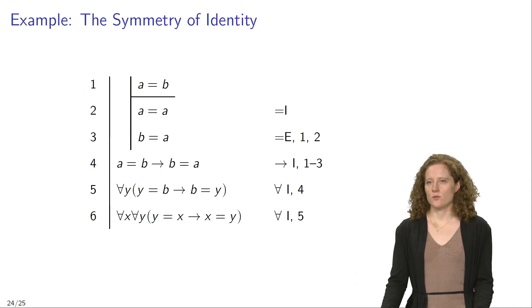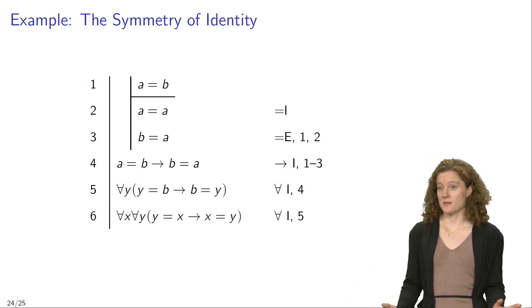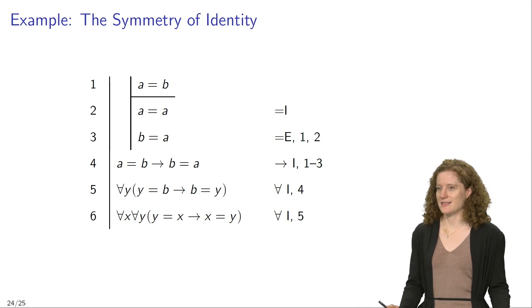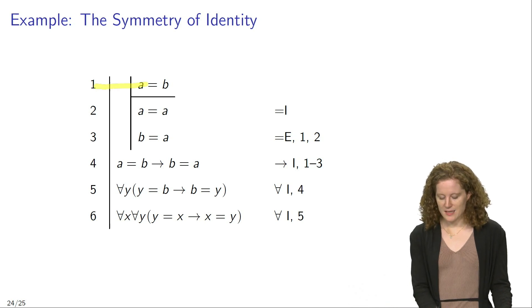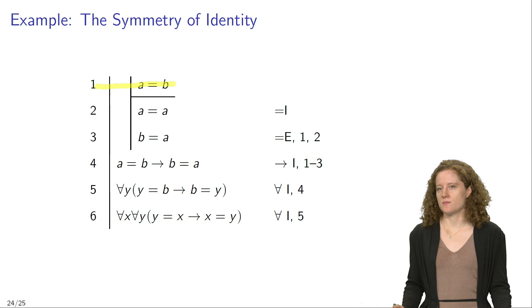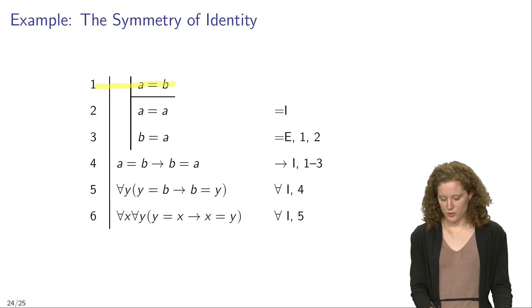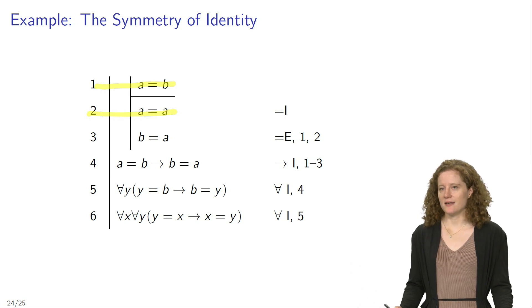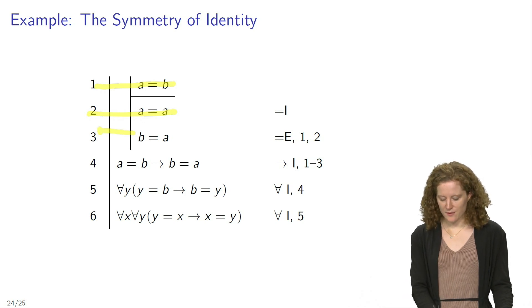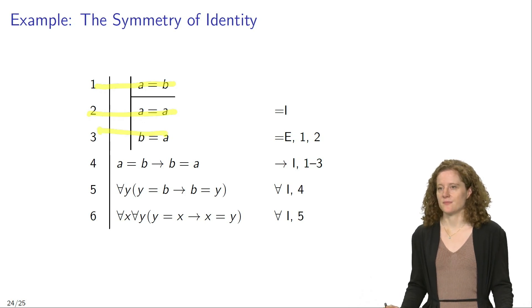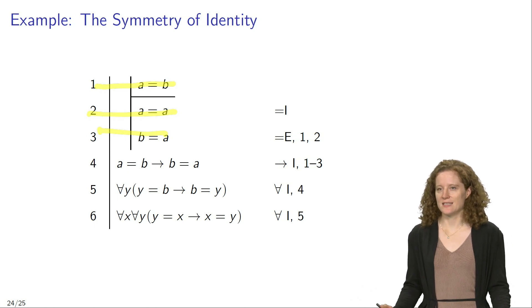Let's look at one example of a proof that makes use of both identity introduction and identity elimination. In line one we start with the supposition that A equals B. In line two we assert that A equals A and justify this by means of identity introduction. In line three we can then infer that B equals A, justified by identity elimination applied to lines one and two.